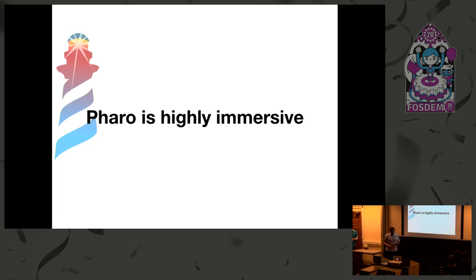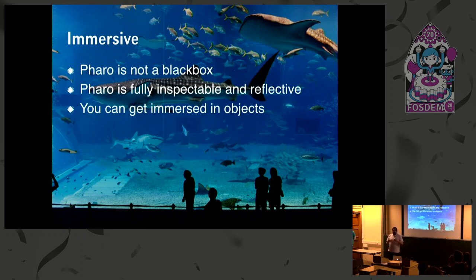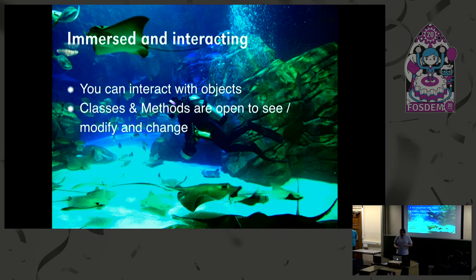FARO is also highly immersive. What we mean by this is that in FARO nothing is a black box. You can check the code of all the methods, modify them, and improve them — or make them worse. But the important thing is that we can always learn from that and get new ideas. It's fully inspectable. We can check all the objects in the image, all the objects in memory, change them, and they have a reflective API to modify. You can interact with all objects; classes and methods are also objects. You can take a class and inspect it, modify it, or send messages to modify it in your program and do nice reflective things.